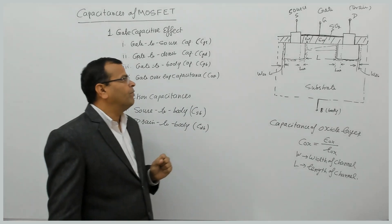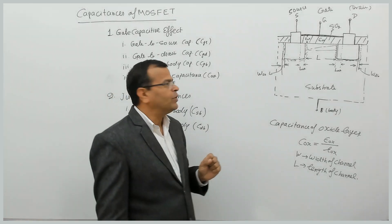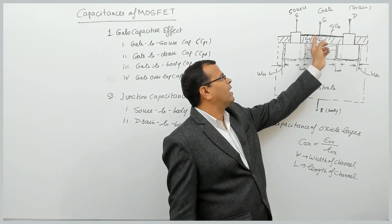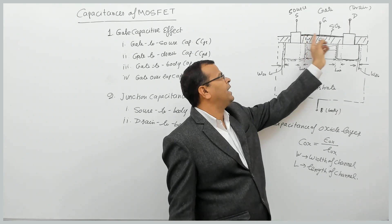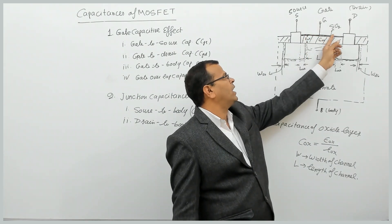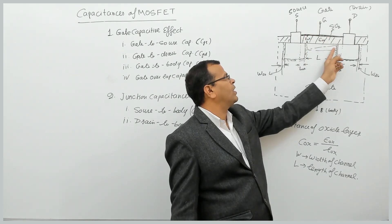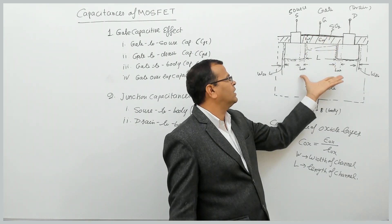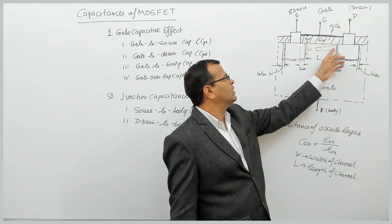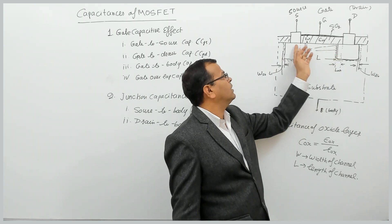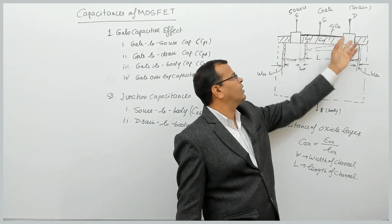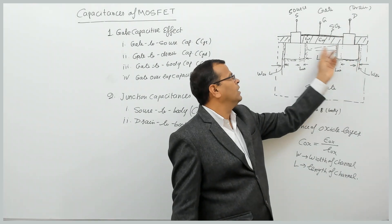The first point to remember is we have an oxide between the gate electrode and the body — the body is the substrate. The region between the source and drain is identified: this is called the source region and this is called the drain region.